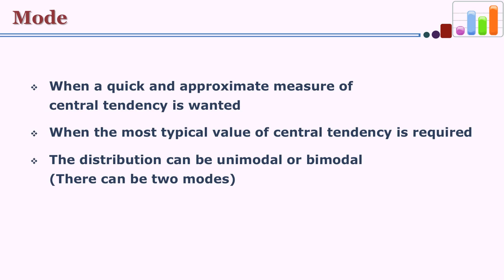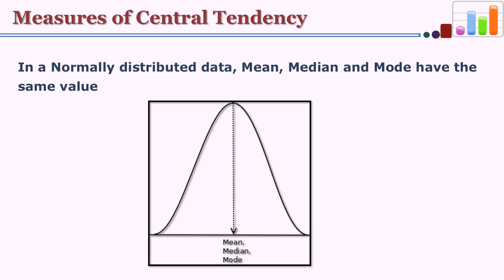It is possible that a distribution can be unimodal or bimodal. For example, if the score 45 appears 20 times and another score like 17 also appears 20 times, then there are 2 modes instead of 1, making the distribution bimodal. Mean, median, and mode are measures of central tendency. If you see a normal probability curve you will find that mean, median, and mode have the same value. If mean, median, and mode are all the same, then naturally that distribution itself is normal.